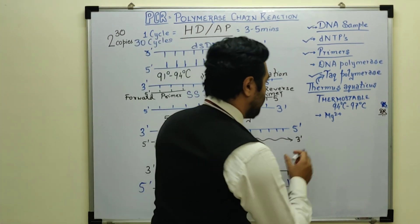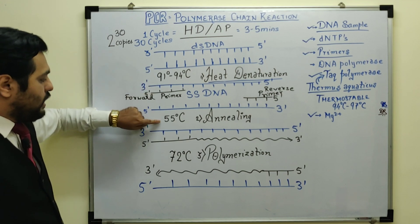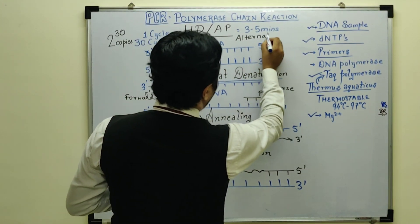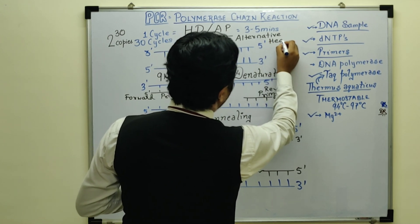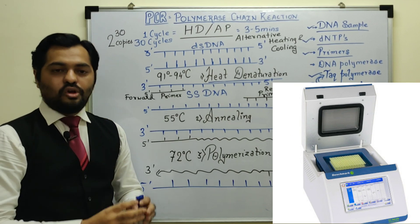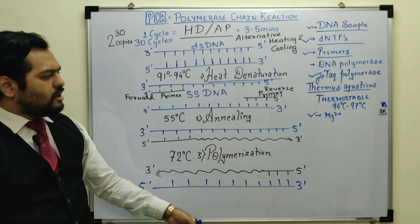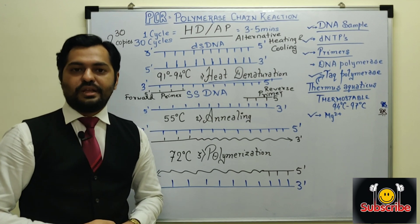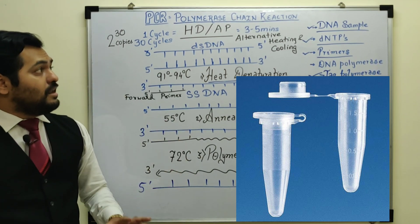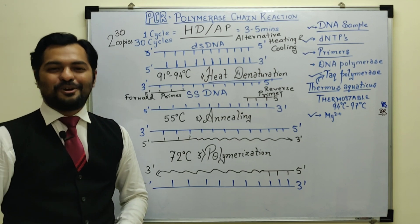Even for polymerization, Mg2+ is used as a cofactor. What is happening is: first we heated, then cooled, then heated again — this is known as alternative heating and cooling. The device we use is an automated machine known as a thermal cycler. In that machine, we place a tube with all the DNA sample and ingredients, and the automated machine runs the entire process. The tube used is known as an Eppendorf tube. This in vitro process generates billions of copies of DNA. That's all from Dipenism.